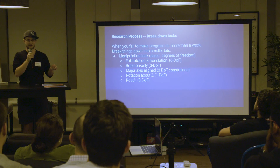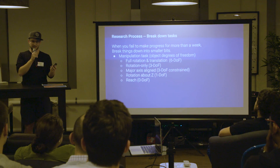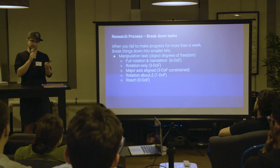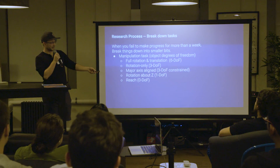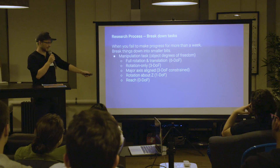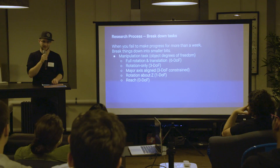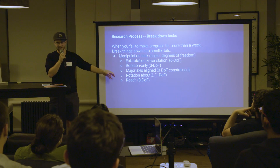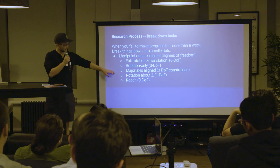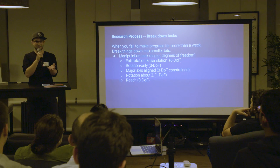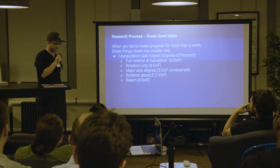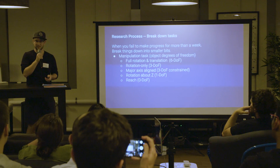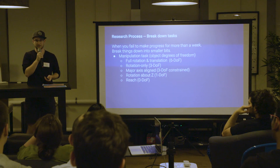We initially tried to achieve six degrees of freedom on the object — not just rotation but also position lifted off the palm. We simplified that to just rotation, then to just major-axis-aligned rotation, then just spinning around Z. When we had trouble with that, we just tried reaching the fingertips to arbitrary positions in space. Eventually we were able to climb back up this ramp, and this was a big part of unlocking research progress early in the project.